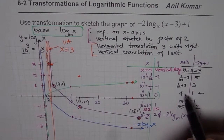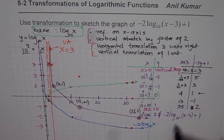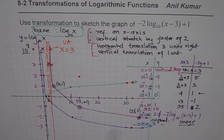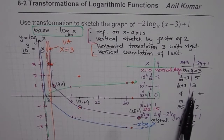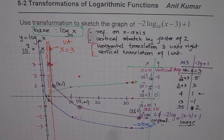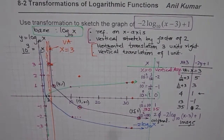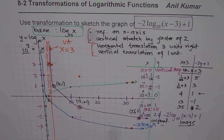You could also sketch your graph by finding the image points directly — these are the image points of the original key points. It depends on the type of question: if they want you to show transformations step by step, do it that way; otherwise, calculate the image points, plot them directly, and sketch your graph. The final graph is shown. Follow these steps and they will always get you the right answer. Thank you and all the best.